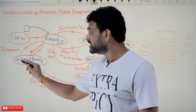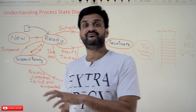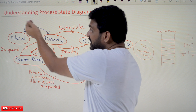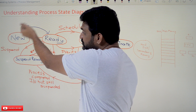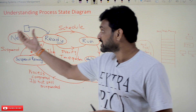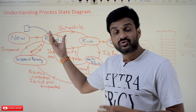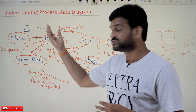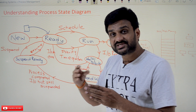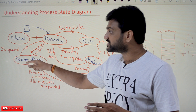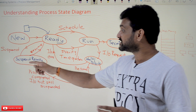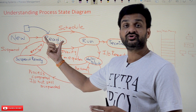Similar to the suspend wait state, there is another state called the suspend ready state. If a high priority process wants to come from the new state to the ready state and there is no room in the ready state, then one of the low priority processes in the ready state will be suspended to the suspend ready state. As and when room is found, it will get resumed back to the ready state.